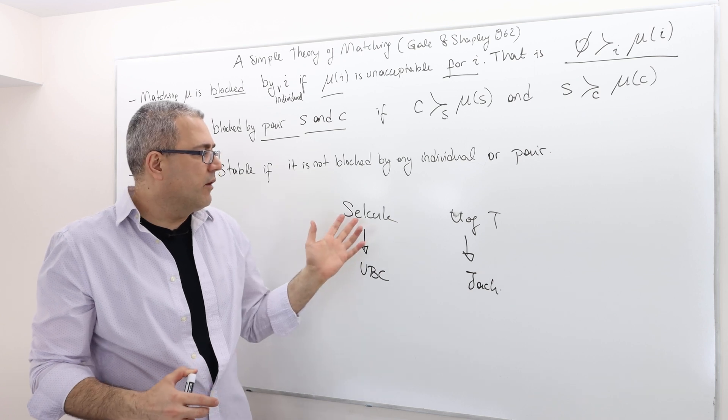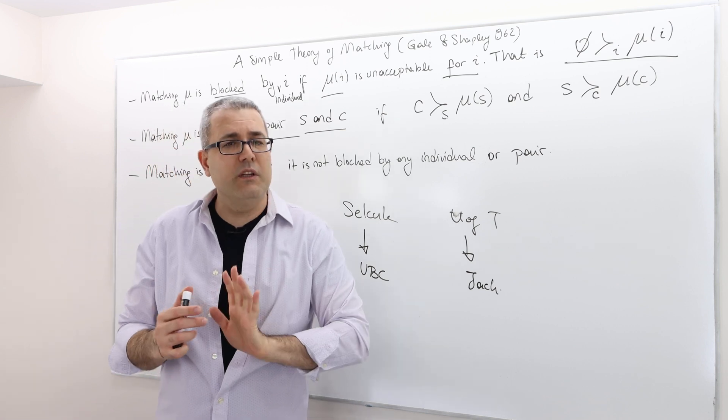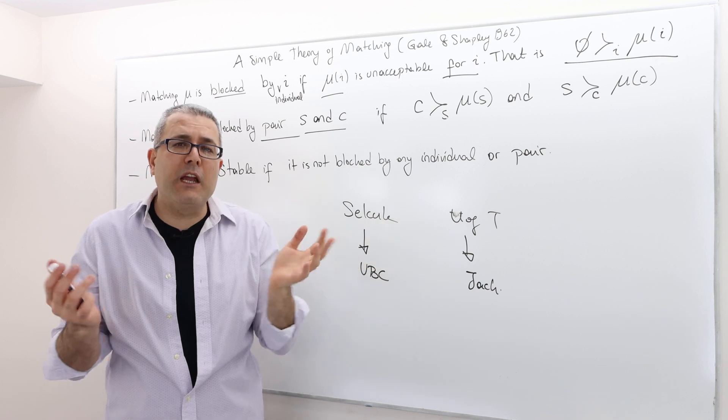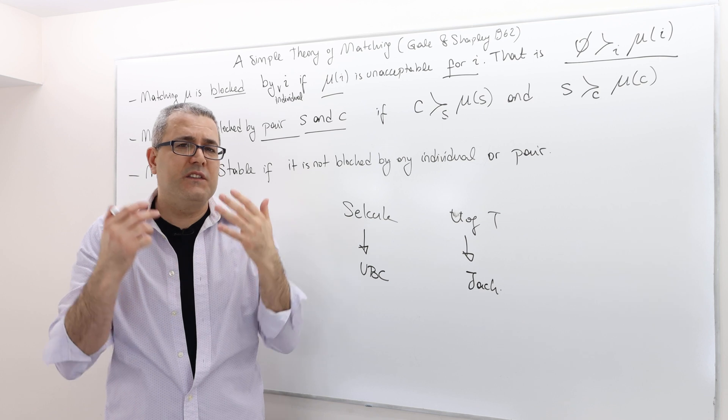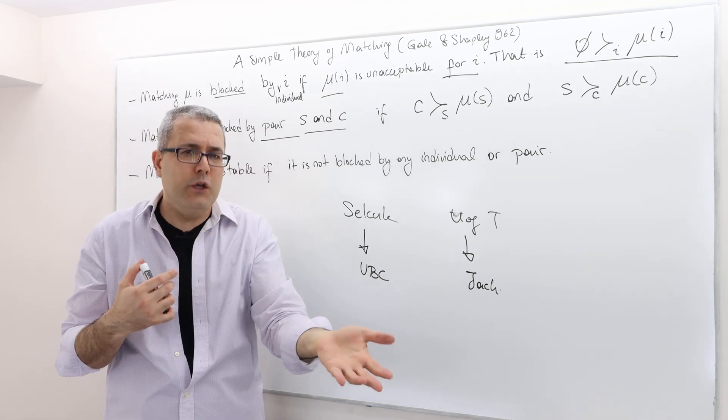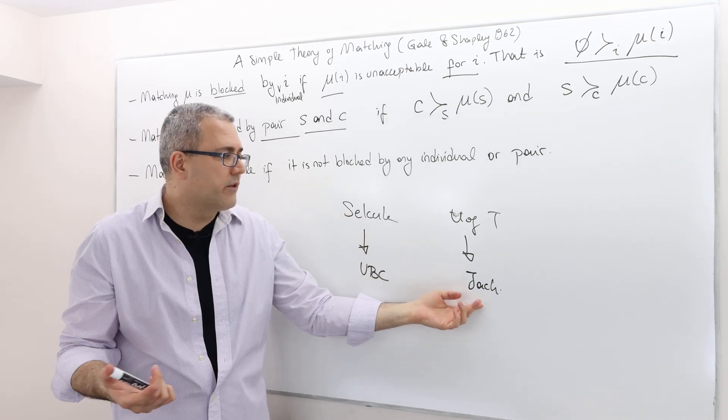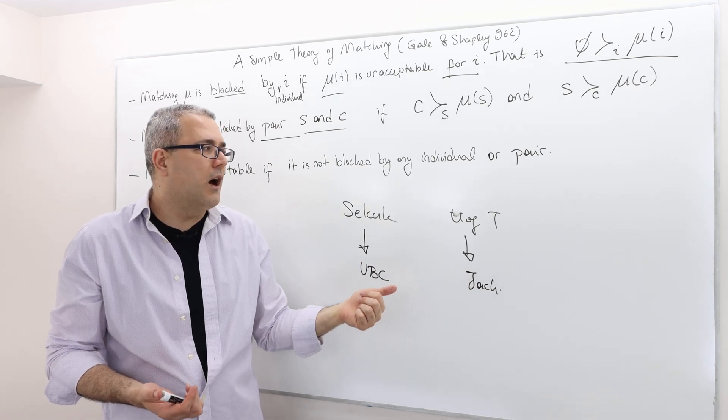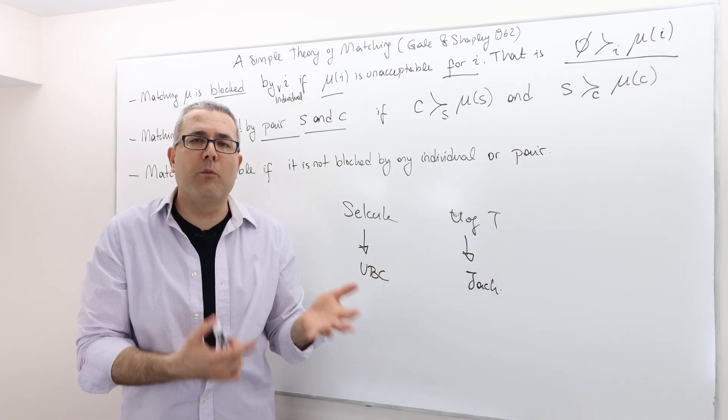So that means this tuple, this pair, Selçuk and U of T, can actually leave this matching and then form their own match. Selçuk may go to U of T and say, you know what, this central authority actually matched me with UBC, but I prefer you. And then U of T may say, the central authority matched me with Jack, but I definitely prefer you over Jack. And so, why don't we leave UBC and Jack and then form our own coalition?